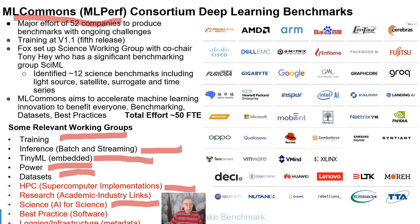They estimate that around 50 FTEs are involved in this tremendous effort, and in the Science Working Group we've identified around 12 benchmarks, but we're only working on four or five at the moment. They have now five releases of the training benchmarks, and now version 1.1.